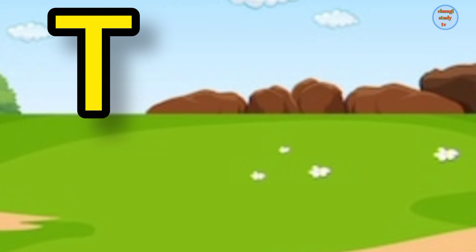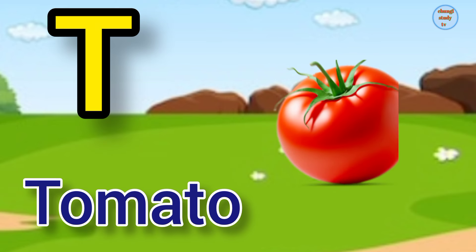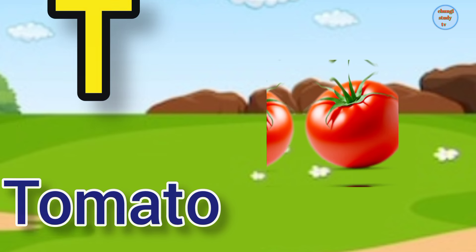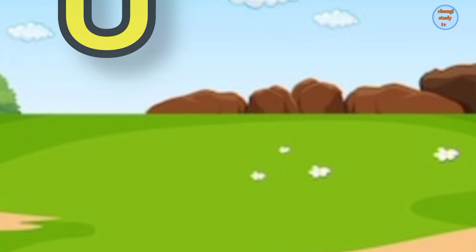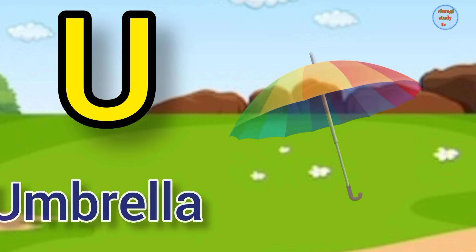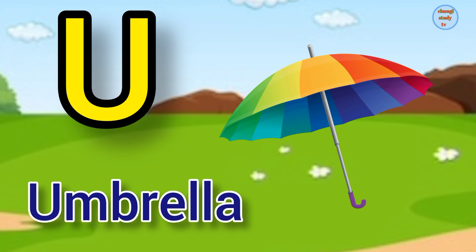T for Tomato, Tomato means tomato. U. U for Umbrella, Umbrella means chata.